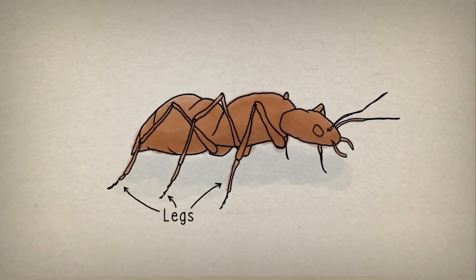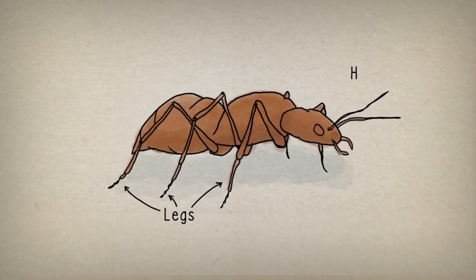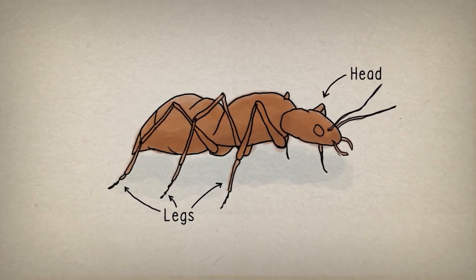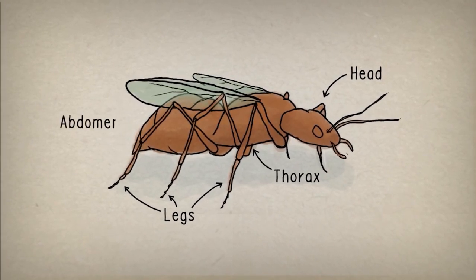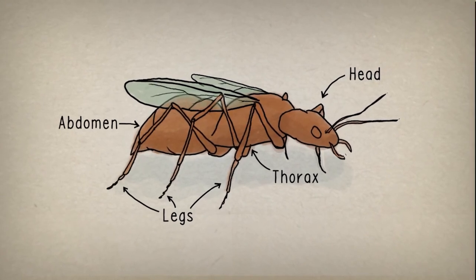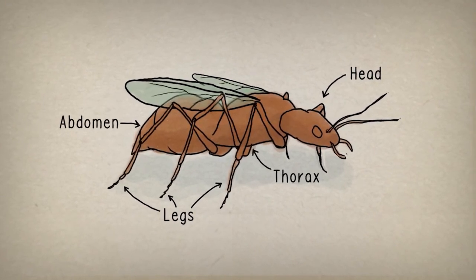Insects have three pairs of legs and a body divided into three sections: a head with eyes, mouth parts and antennae, a thorax containing muscles where the legs and wings are attached, and an abdomen containing stomach and breathing tubes.